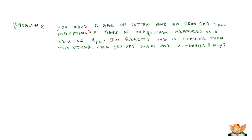Problem 3: You have a bag of cotton and an iron bar, each indicating a mass of 100 kg when measured on a weighing machine. In reality, one is heavier than the other. Which one is heavier and why? With practical knowledge, iron is heavier. To prove it, the density of cotton is mass divided by volume. Mass is 100 kg and volume of cotton is extremely large because cotton occupies much more volume.